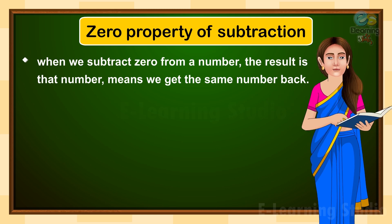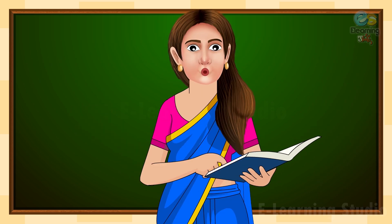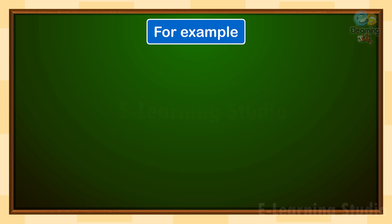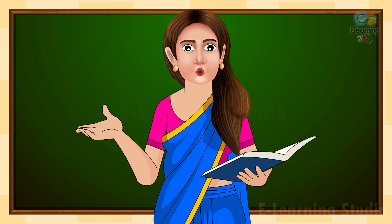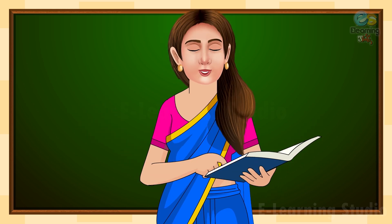In this property, when we subtract zero from a number, the result is that number — we get the same number back. For example, when we subtract zero from 324, we get 324. And again, 58 minus zero gives us 58. When we subtract zero from any number, we get the same number; it means we are not taking away anything.